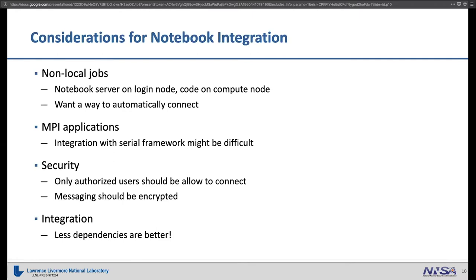Security is very important. As Thomas showed yesterday, you can eavesdrop on TCP traffic — you can't execute code, but you can listen to data being sent. So we need some way to encrypt messaging and make sure no unauthorized party can connect to your kernel. Integration is also a concern: we have Intel machines and IBM machines, and portability is important. One big reason we use Lua is that it's difficult to compile Python on IBM machines, so we want something with minimal dependencies.